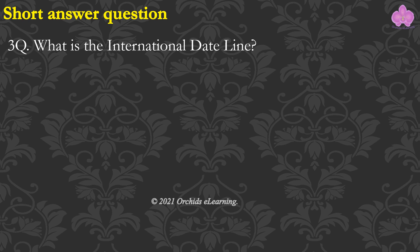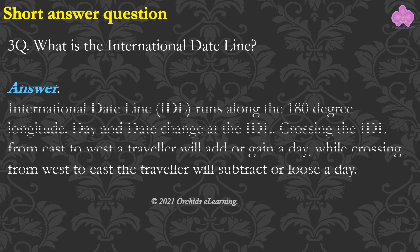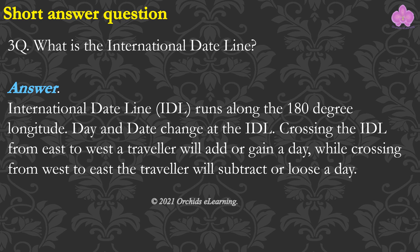What is the International Date Line? International Date Line runs along the 180 degree longitude. Day and date change at the IDL. Crossing the IDL from east to west, a traveler will add or gain a day, while crossing from west to east the traveler will subtract or lose a day.